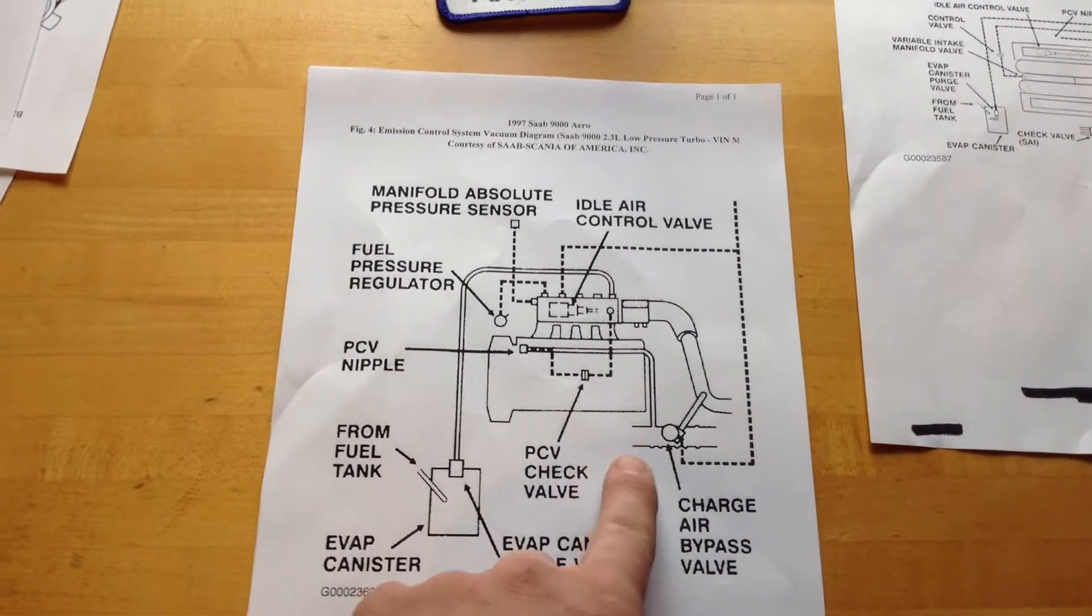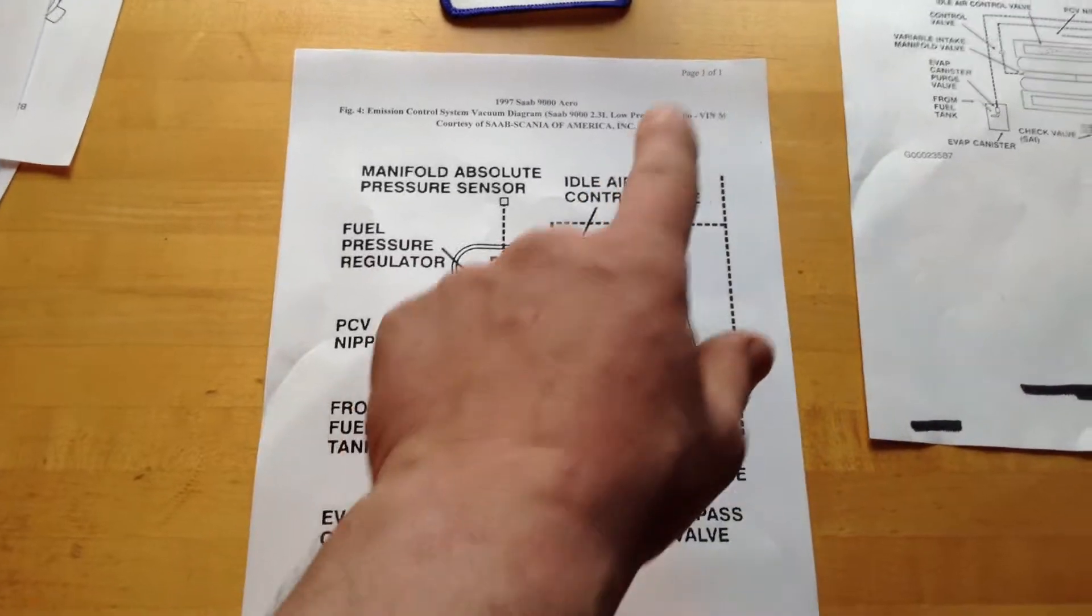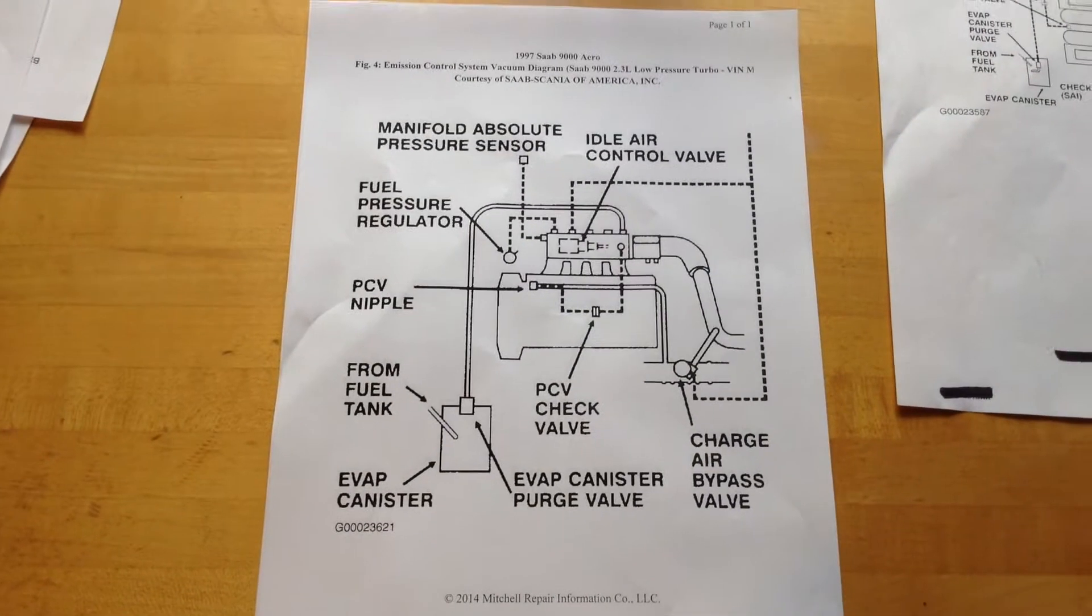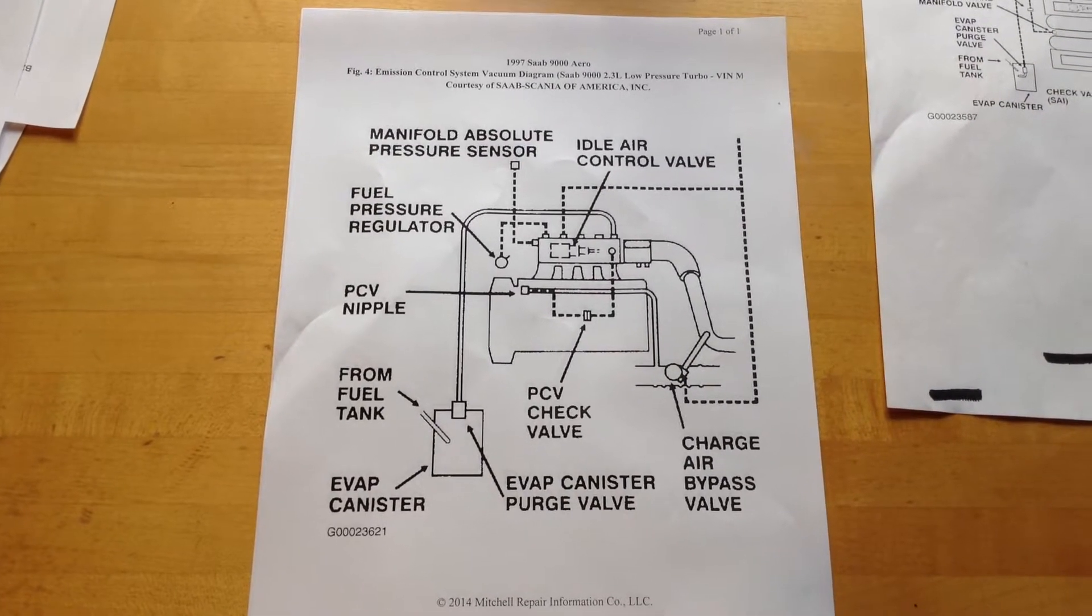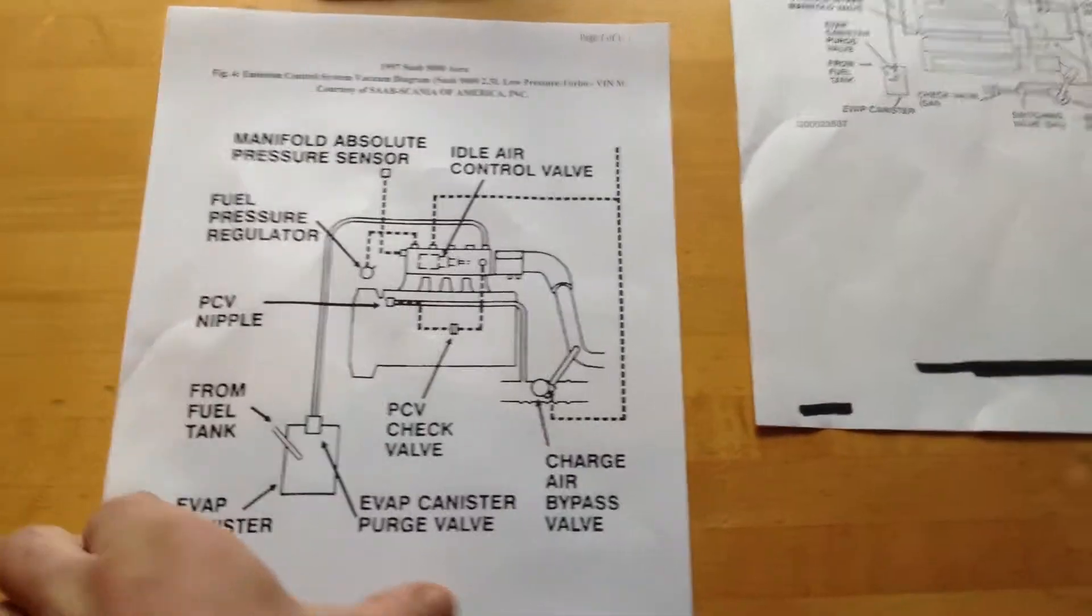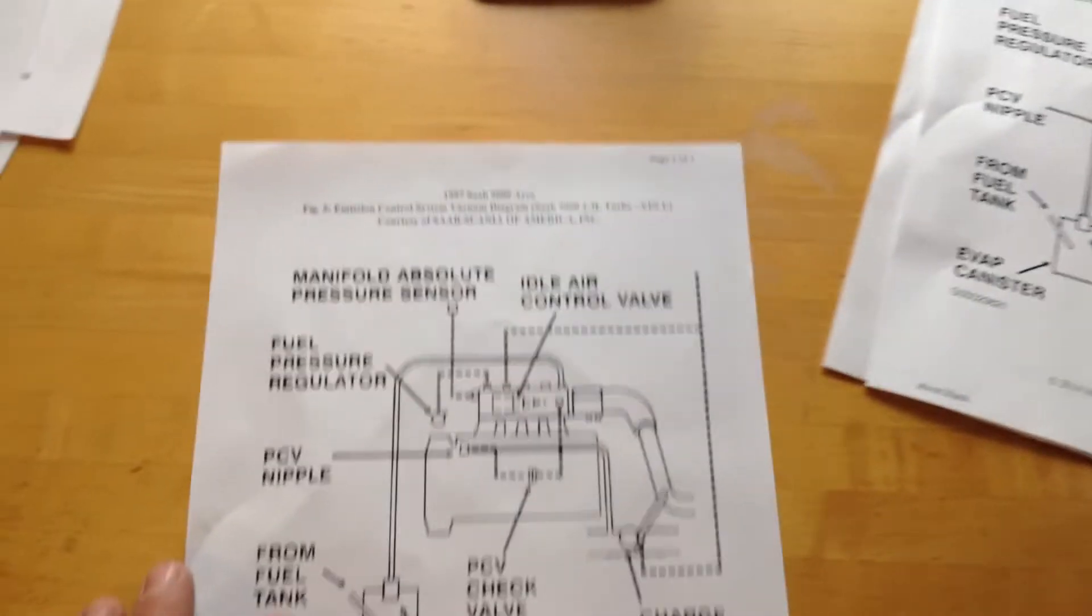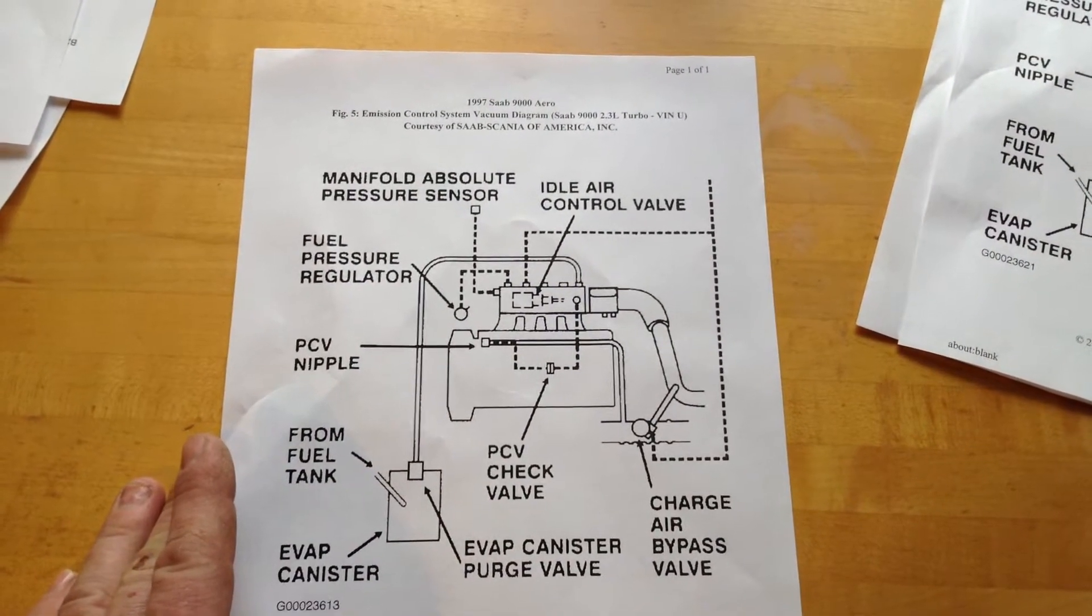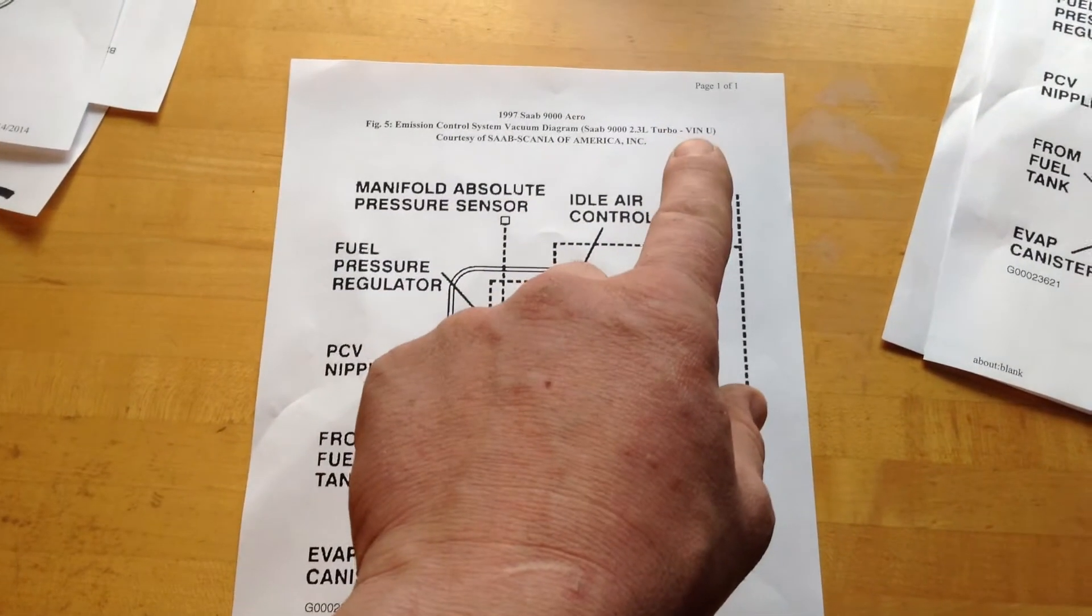This doesn't have the APC solenoids. I believe that's the difference from the VIN M and the other VIN, which we'll see in a moment. So if you need this information, just pause it right there. So let's see what else we've got here. I printed up a few. So here's another one. I'm not exactly sure what's different between this one and the last one, but this is VIN U.